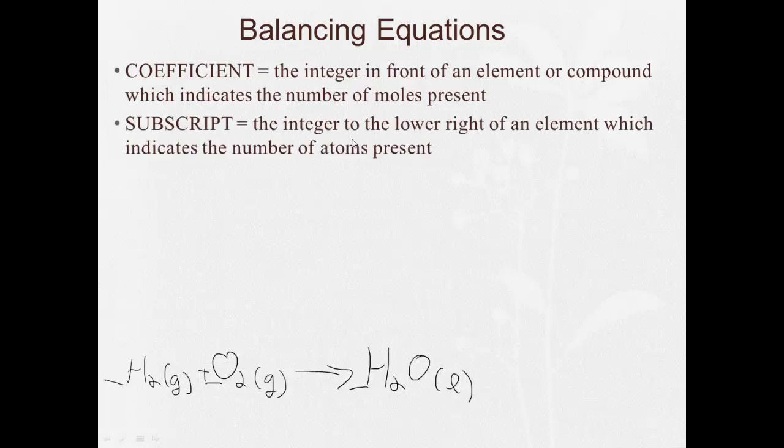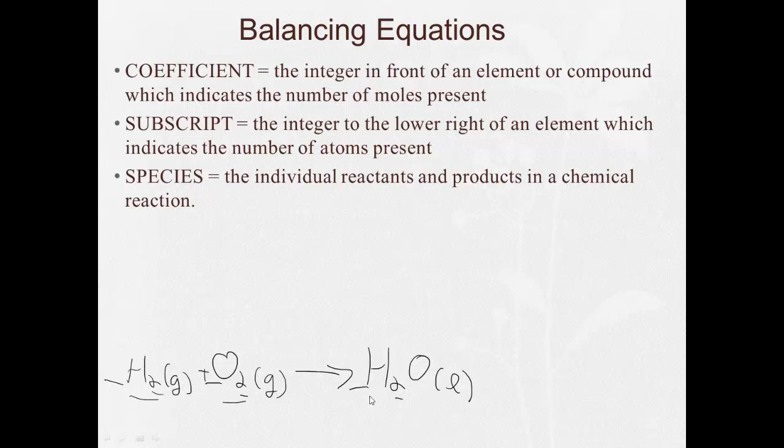The subscript is the integer to the lower right of an element which indicates the number of atoms present. So there's a two here, there's a two here, there's a two here. There's nothing here, so it's understood to be a one. A species refers to each individual reactant and or product in a chemical reaction. So each one of these would be referred to as a species.